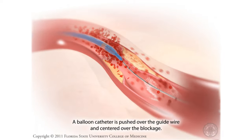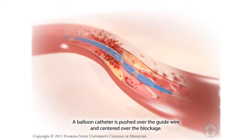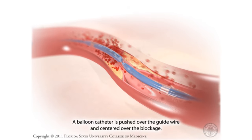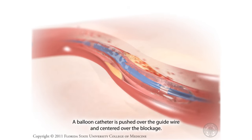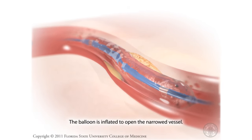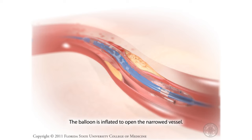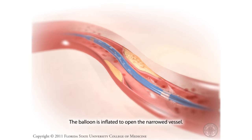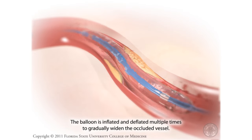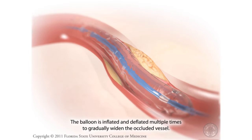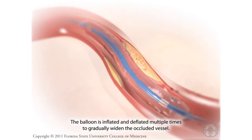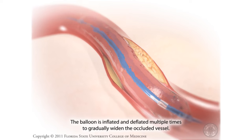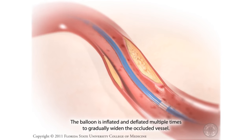A balloon catheter is pushed over the guide wire and centered over the blockage. The balloon is inflated to open the narrowed vessel, and is inflated and deflated multiple times to gradually widen the occluded vessel.